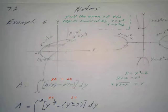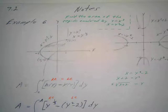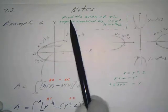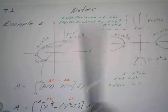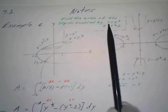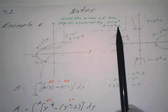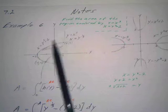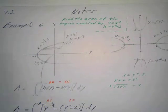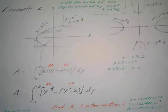These are notes from section 7.2, example six on page 394. The problem is to find the area of the region enclosed by the curve y equals x cubed and x equals y squared minus 2. We talked about how to sketch it in the previous video. Now let's see how to do this on the calculator.